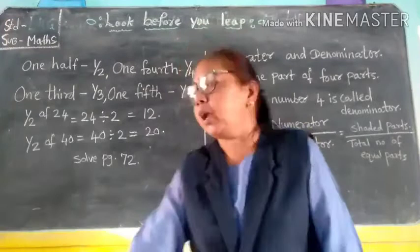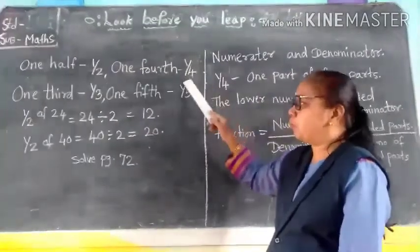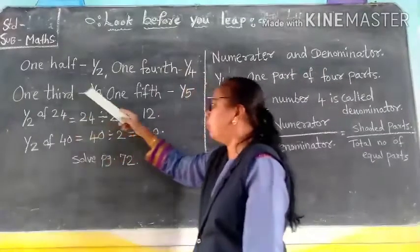You know that in fractions, one half is 1/2, one fourth is 1/4, one third is 1/3, and one fifth is 1/5.